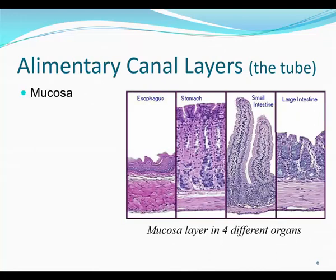From inside out, the innermost layer of the alimentary canal is the mucosa layer. Since it has the lumen on one side, which may contain food if you just ate, the mucosa layer is epithelial in nature. This epithelium has all the glands and the cells that absorb the building blocks. Its functions include protection, secretion, and absorption.